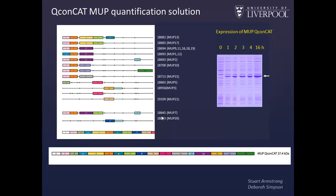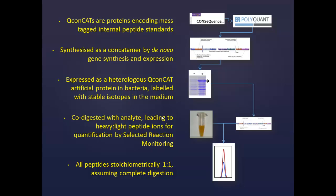The QCONCAT itself expresses extremely well. After 16 hours of induction, we have large quantities of this protein — and it doesn't need to fold because its fate is to be digested. We then take that expressed protein and do the co-digest, in this case using a urine sample for the MUP quantification, and perform quantification by selected reaction monitoring. The nice thing about this approach is that if we put in a picomole of the protein, after digestion we will have a picomole of each of the peptides, so we don't have to quantify each peptide individually.